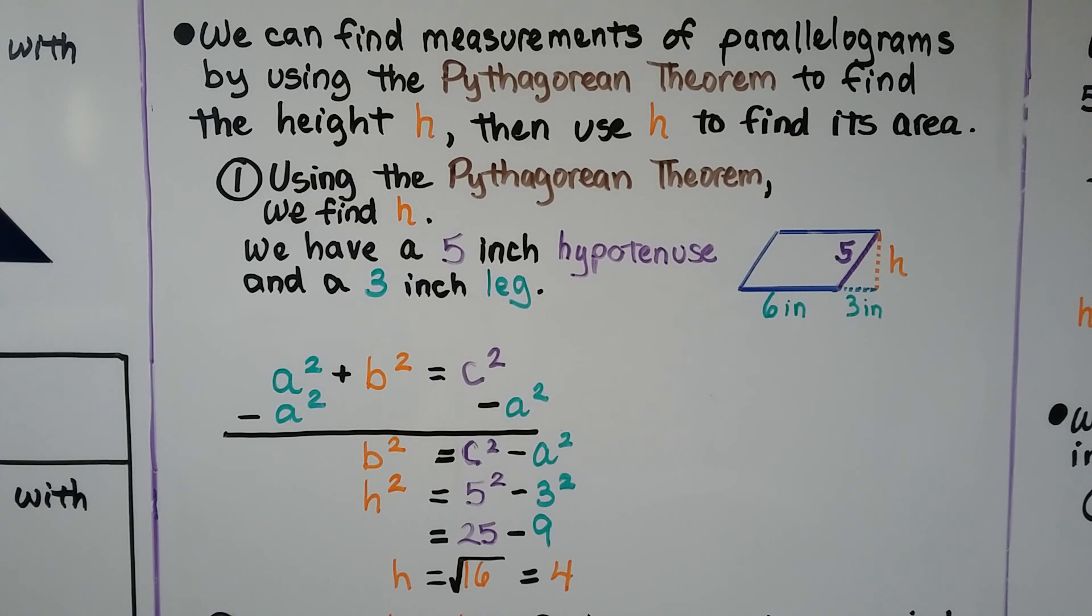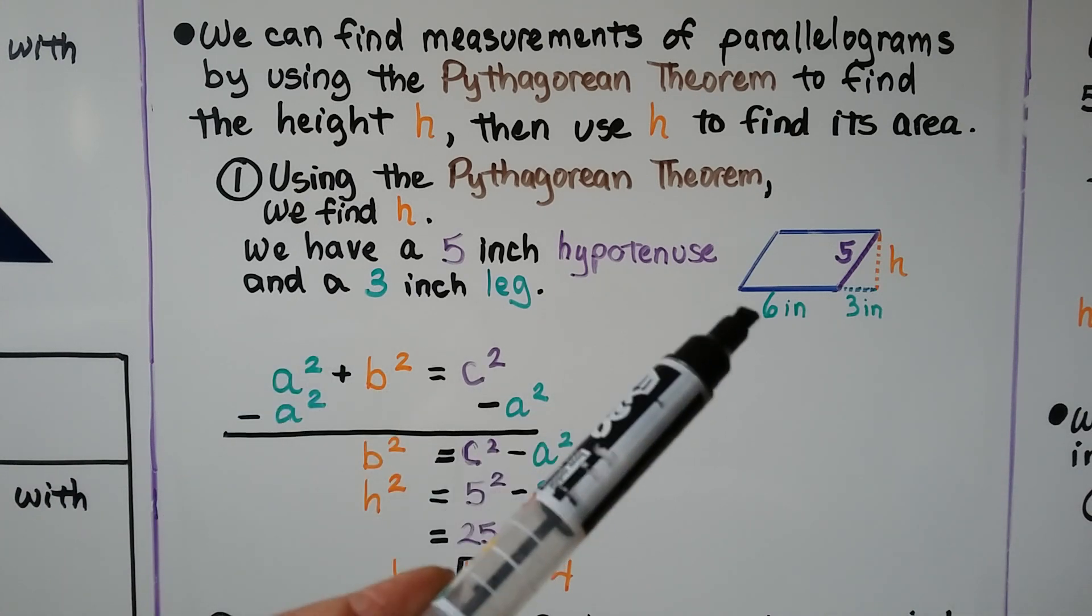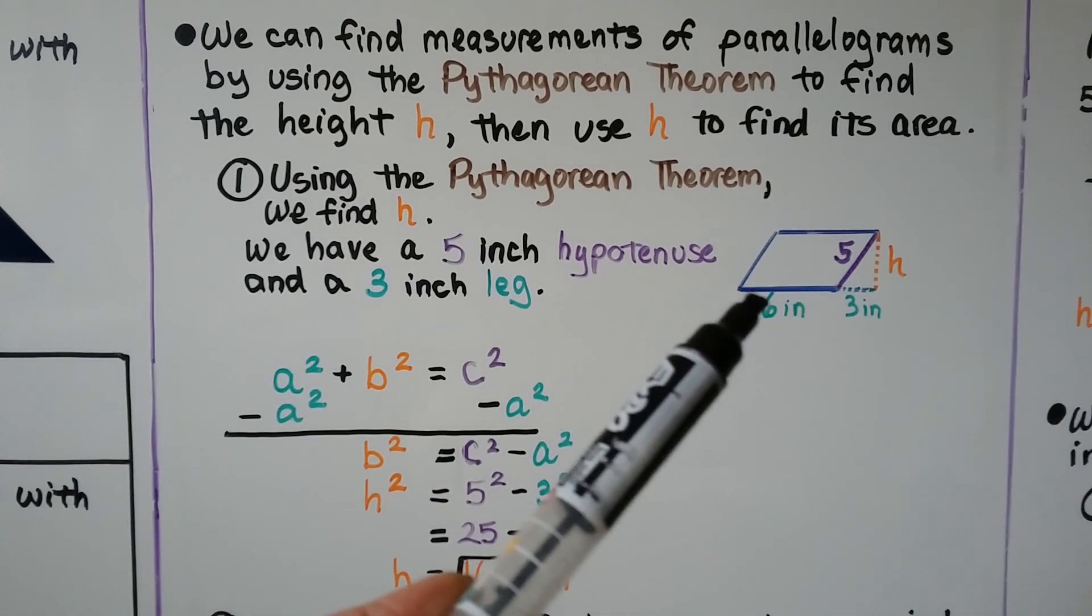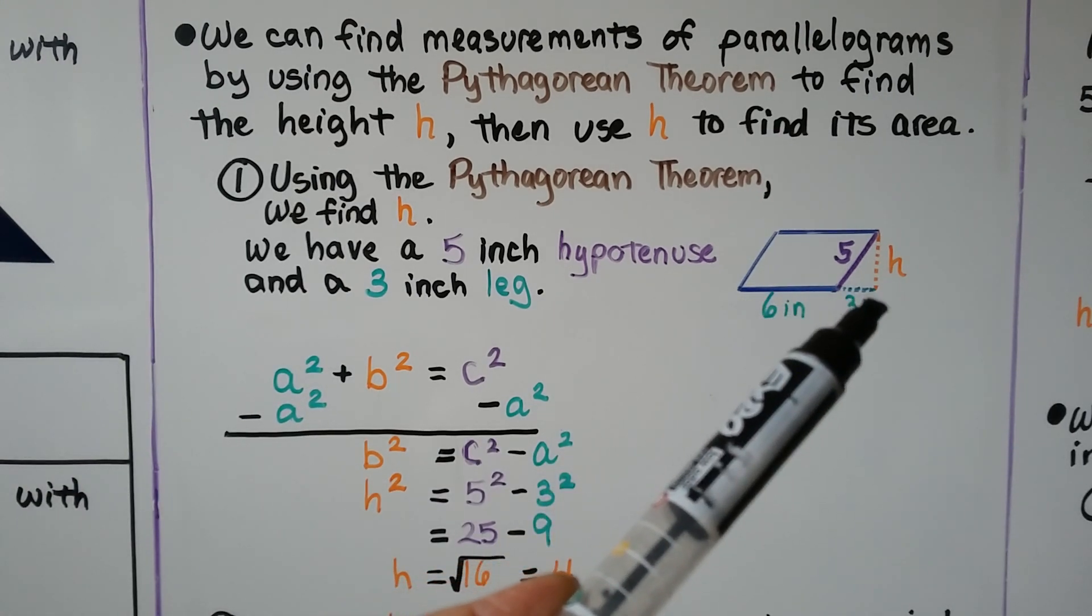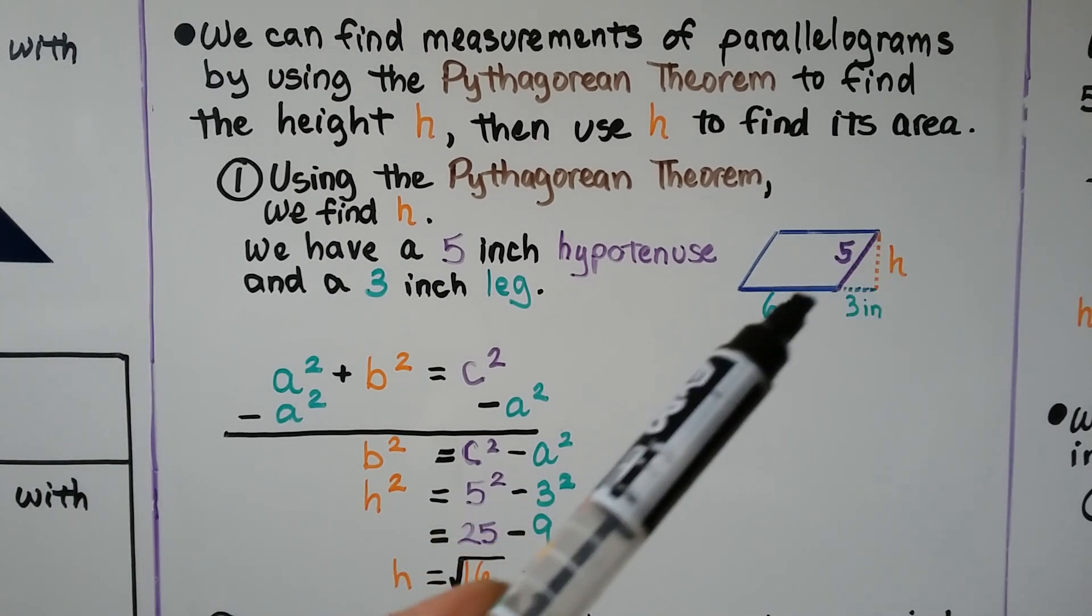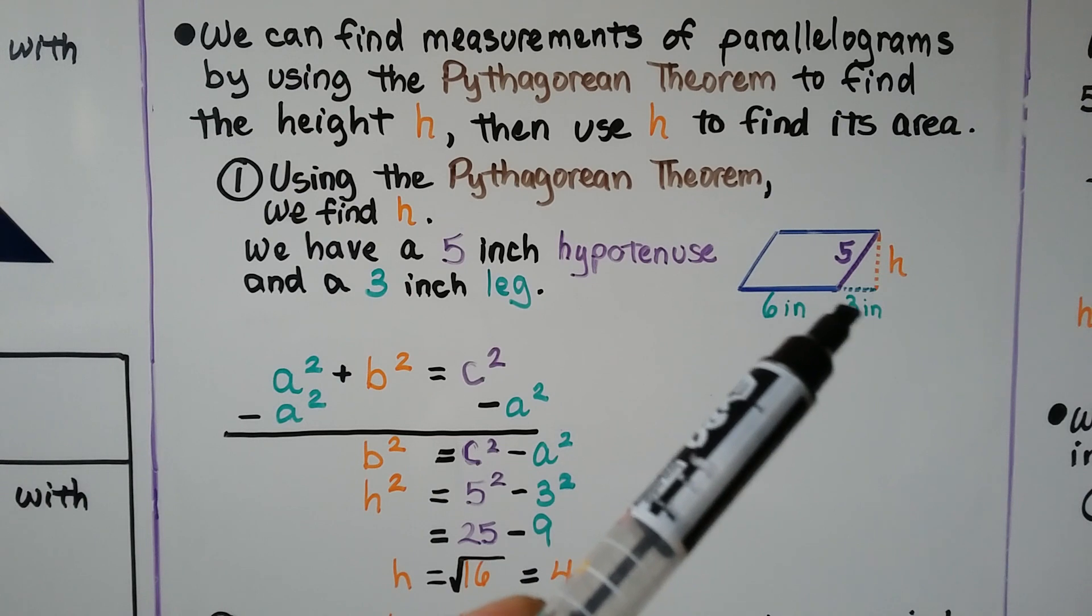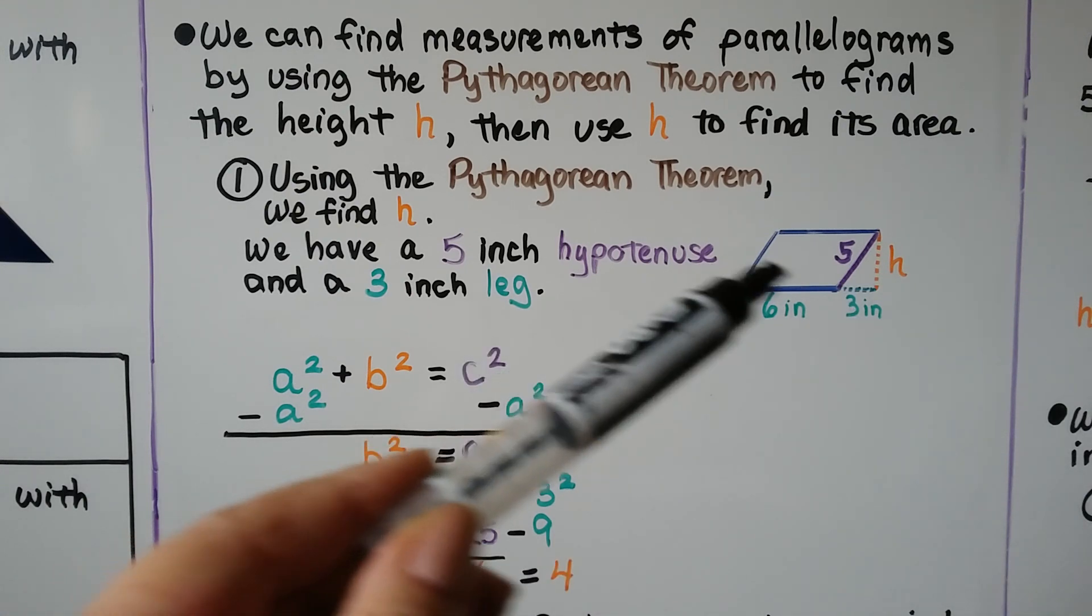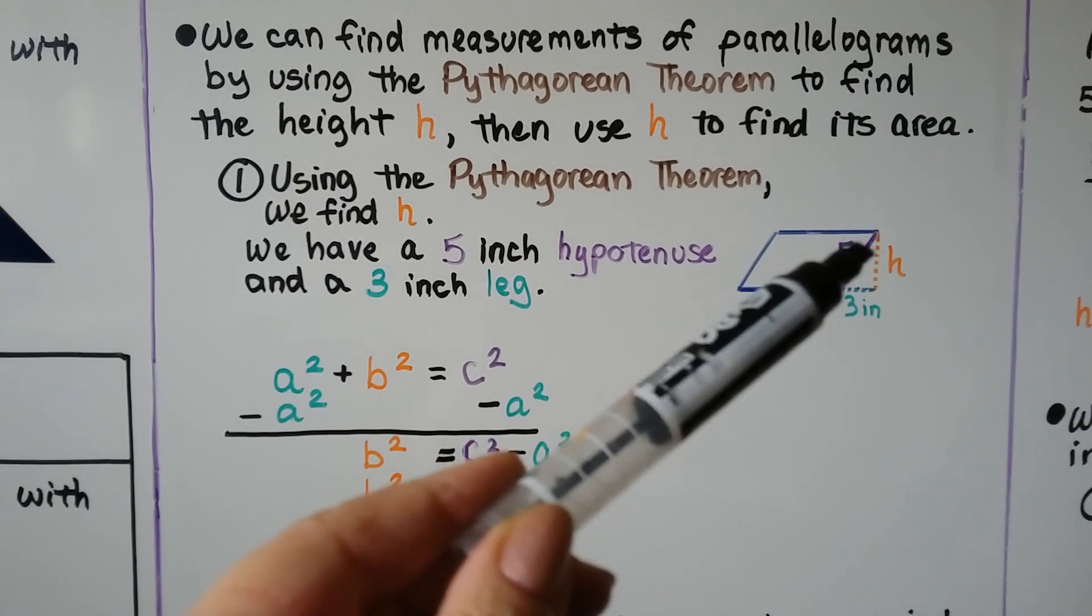We can find the measurements of parallelograms by using the Pythagorean theorem to find the height h and then use h to find its area. So using the Pythagorean theorem, we find h. We can see there's a base here that's 6 inches. If we extend this out to make a line perpendicular for the height, we have a 3-inch extension here. We can see there's a hypotenuse for this triangle of 5.